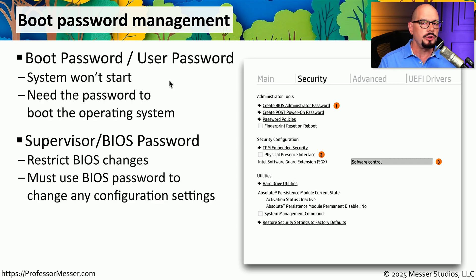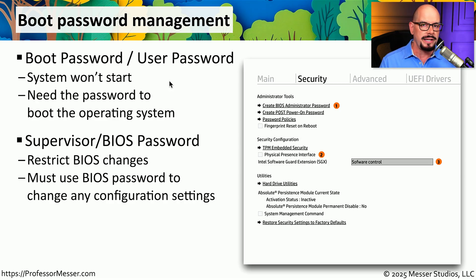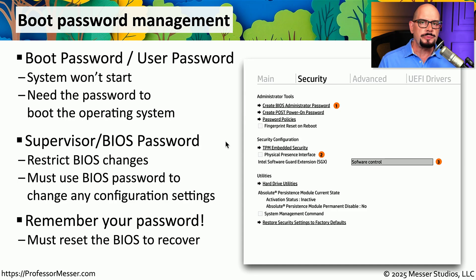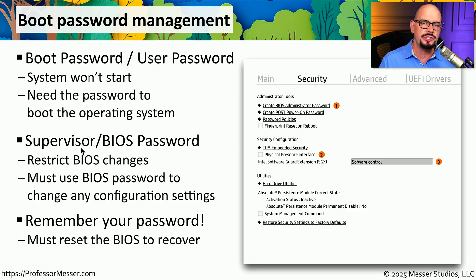As a system administrator, you may want to make configuration changes and prevent anyone from undoing those changes. A good example is disabling USB connections for security reasons and not wanting someone to re-enable them. To prevent this, we would configure a supervisor password — you might also see this referred to as a BIOS password. This restricts anyone from starting the BIOS configuration unless they have the correct password. Both of these passwords are obviously important to remember: if you don't have the boot password, you can't start the computer, and if you don't have the supervisor password, you can't make any changes to the BIOS.